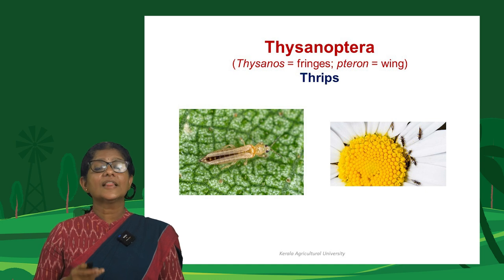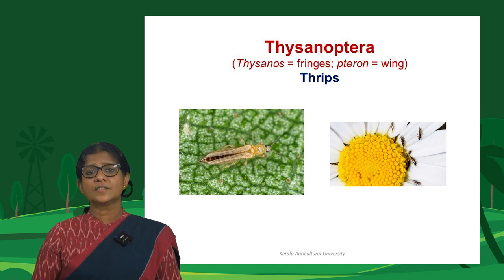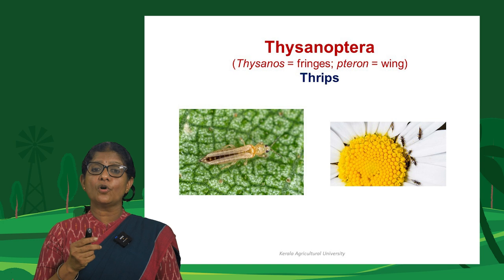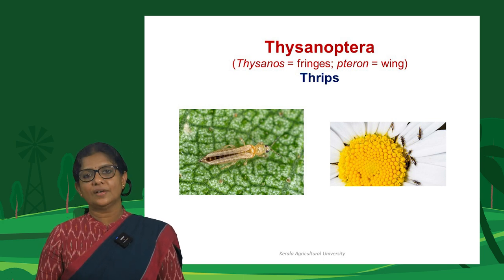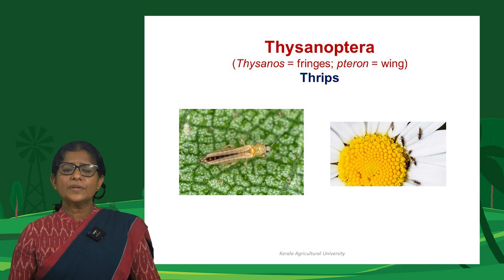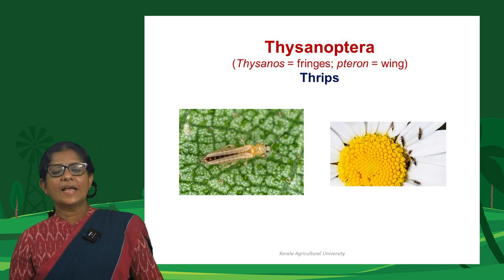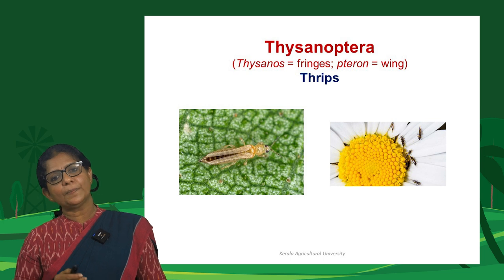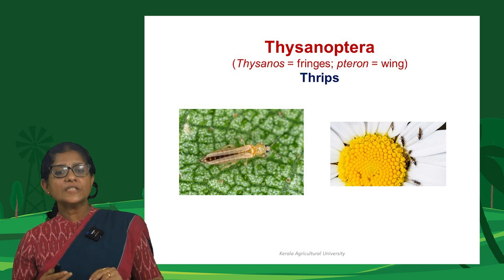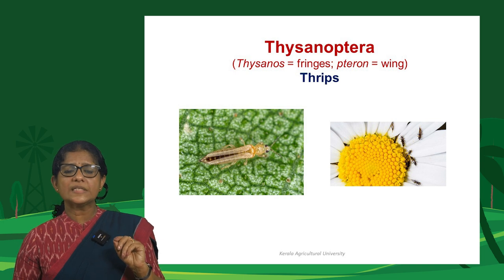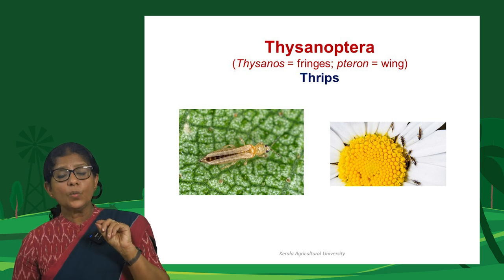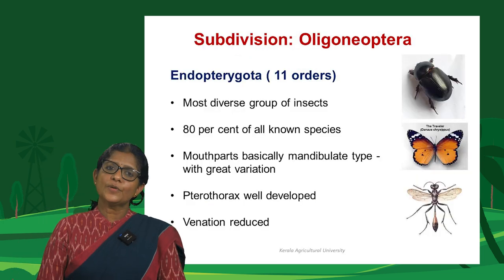Thysanoptera are thrips — note that 'thrips' is both singular and plural. Many are phytophagous sap-sucking insects, and some are predaceous. The word Thysanoptera derives from their peculiar fringed wings — 'thysanos' means fringed and 'ptera' means wing. The wings are very narrow and do not cover the entire abdomen at rest, but the wing margins bear fringes of setae.